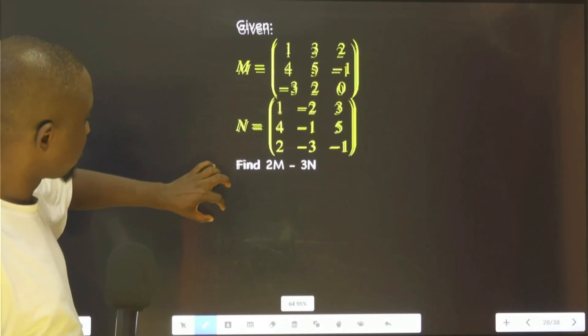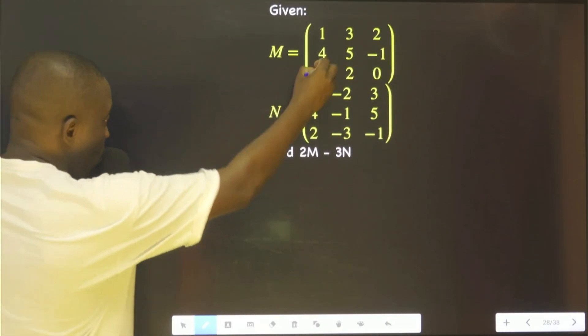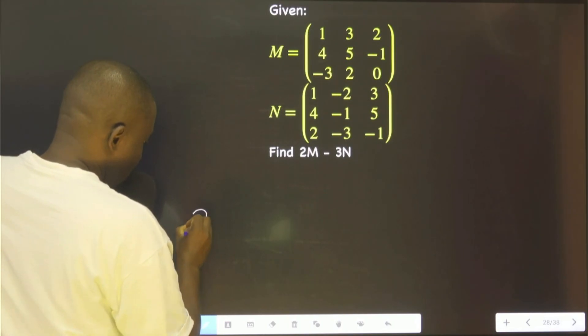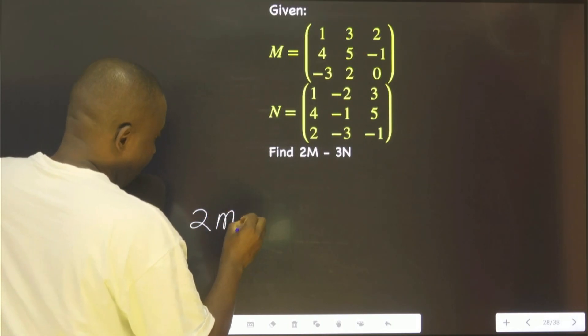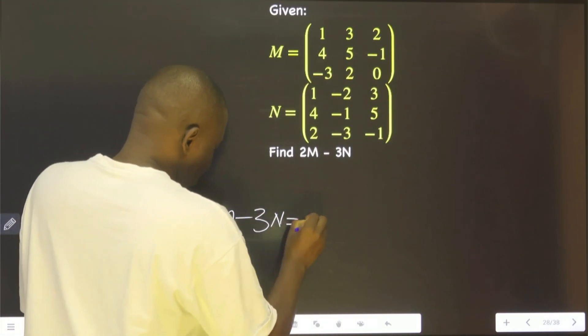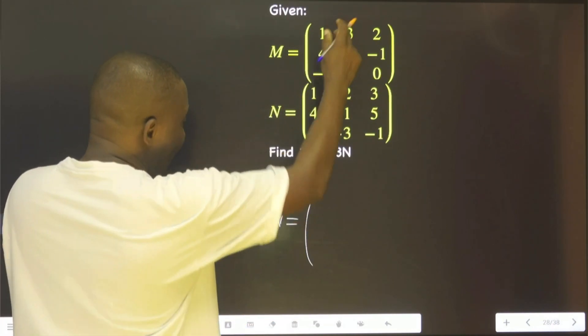Let's look at this. What is 2M minus 3N? You agree with me, 2 multiplied by everything here.